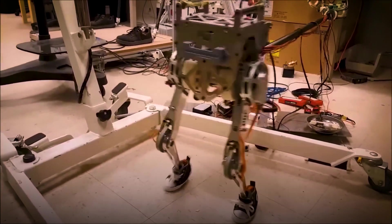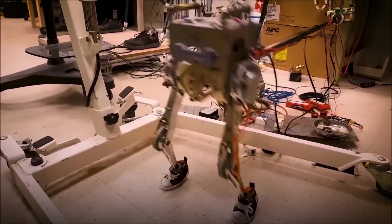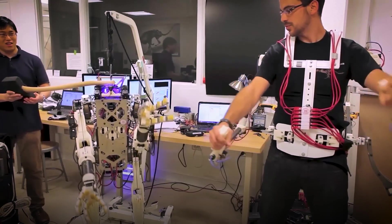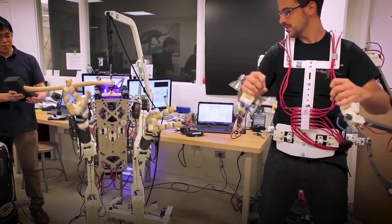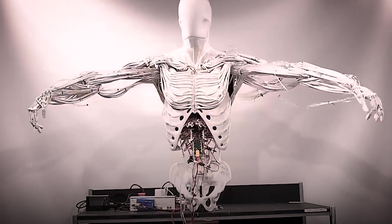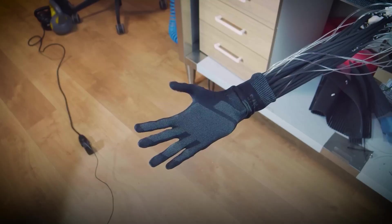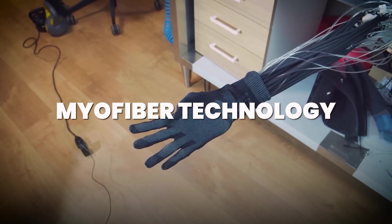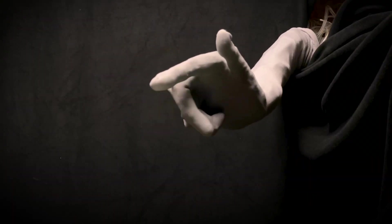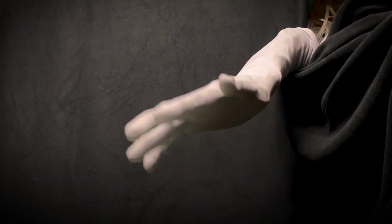Now, unlike most humanoid robots that rely on clunky motors and loud actuators that sound like a dying printer trying to do yoga, Clone Alpha is built on something far more advanced, myofiber technology. These are soft, water-powered artificial muscles that behave almost exactly like ours.